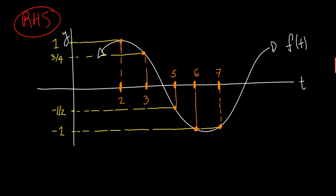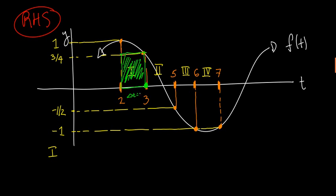We have this region and we're going to start making rectangles. There are four intervals over which we'll make rectangles. In region 1, since we're computing a right-hand sum, we're going to use 3 as the endpoint. The rectangle has a length of 1 — delta t equals 1 — and the height is just 3/4. So we multiply 1 by 3/4. That's the area of rectangle 1.